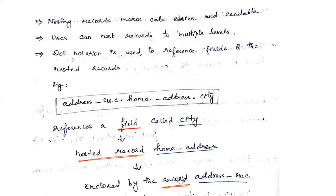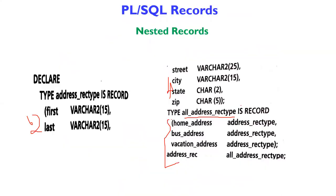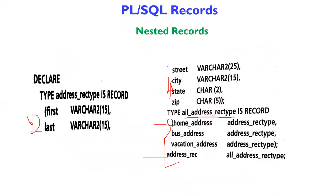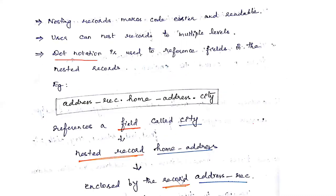Nested records make code easier and more readable. Users can nest records to multiple levels. To access a particular field in a nested record, you use dot notation. For example: address_record.home_address.city — where address_record is the outer record name, home_address is the nested record field name, and city is the field within the nested record.